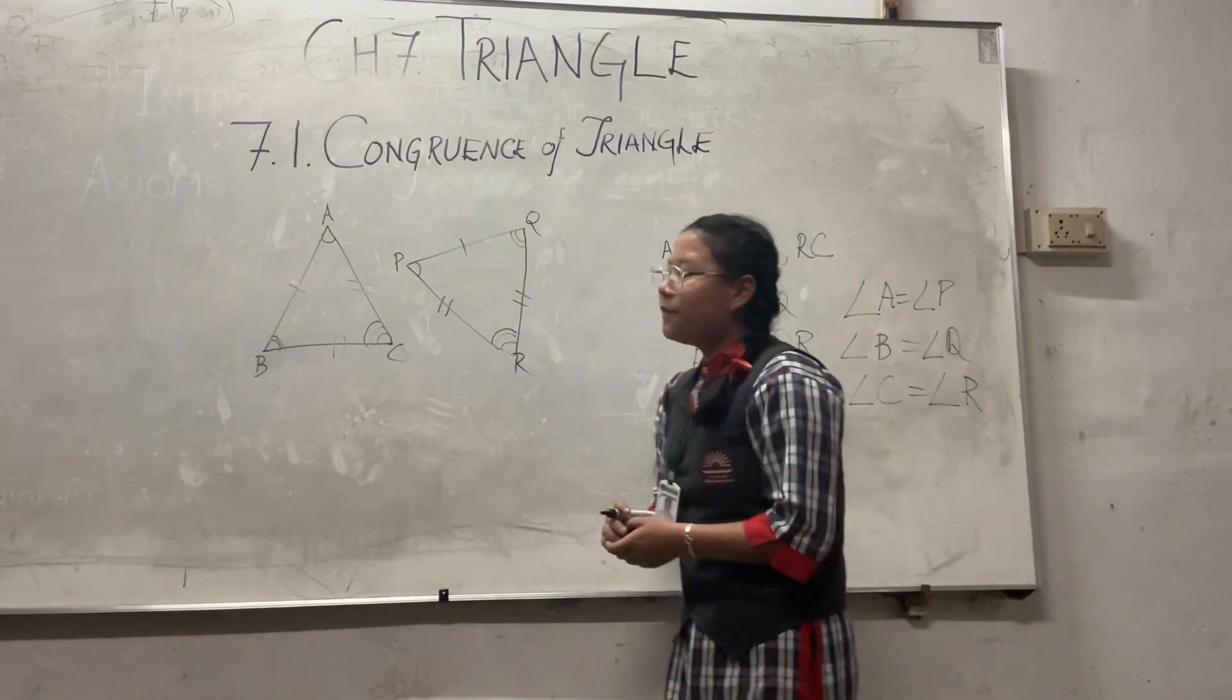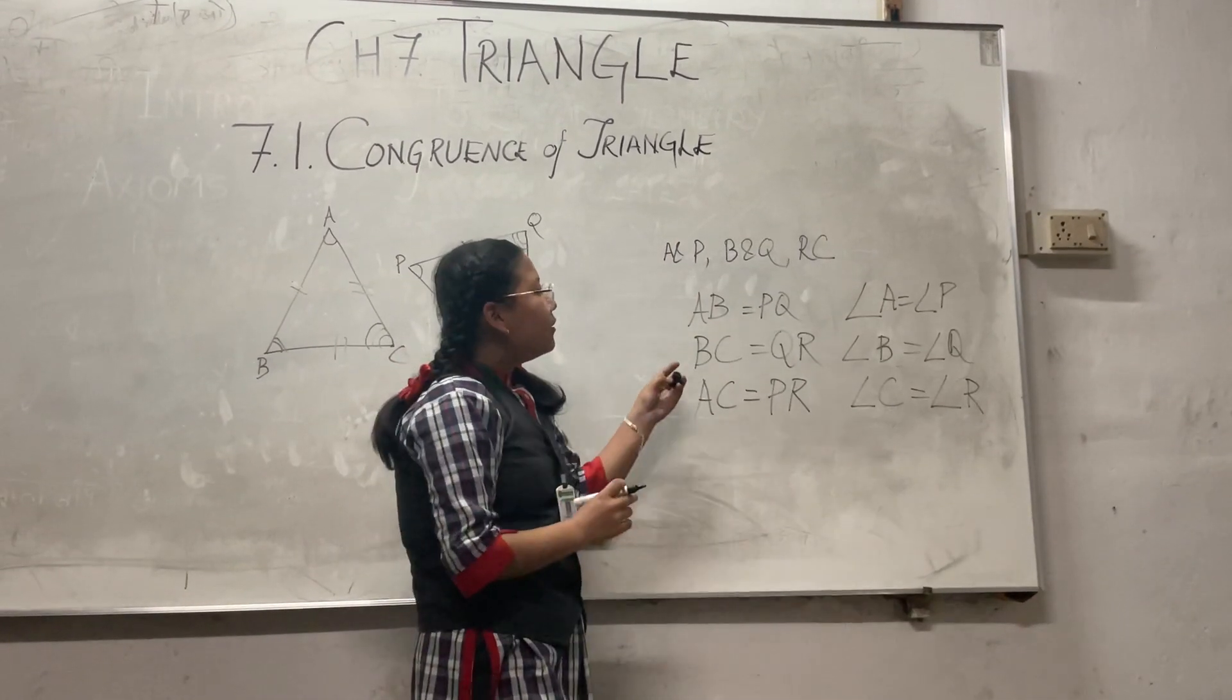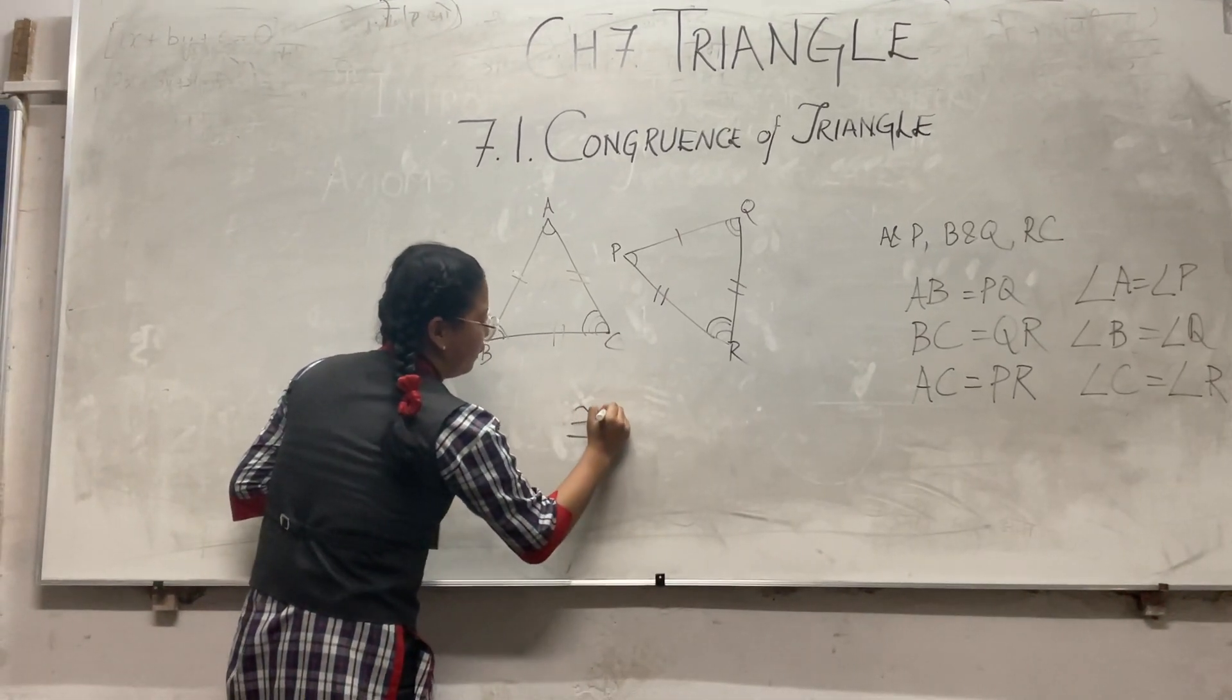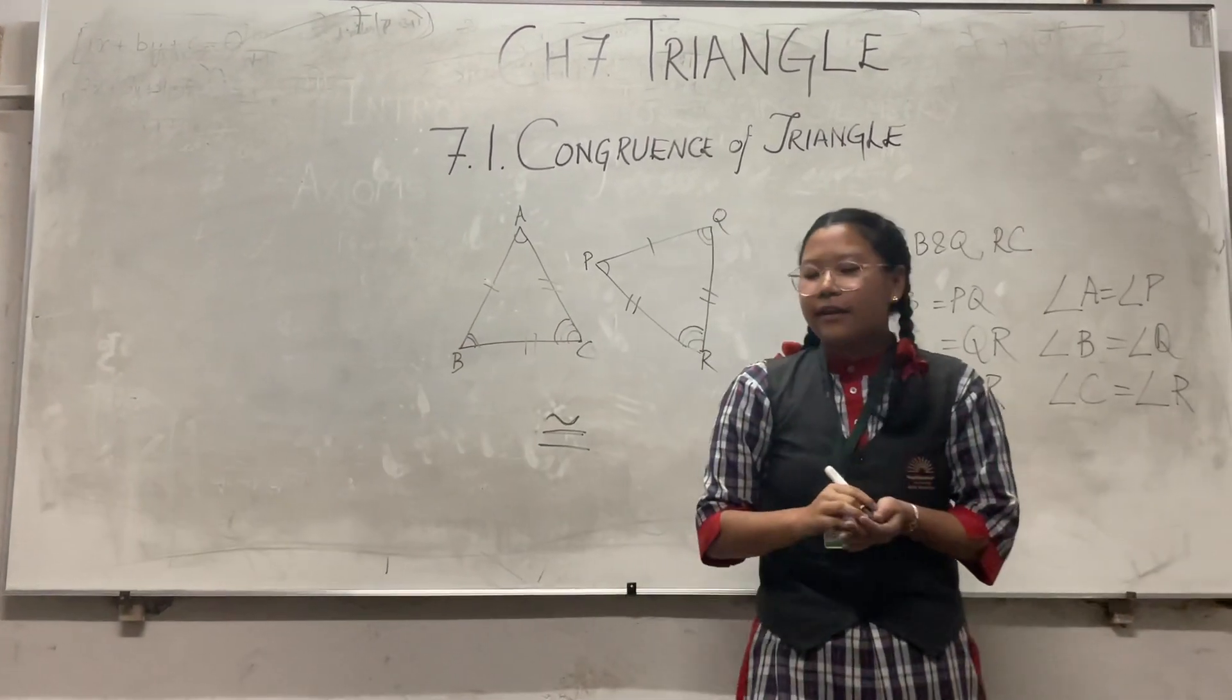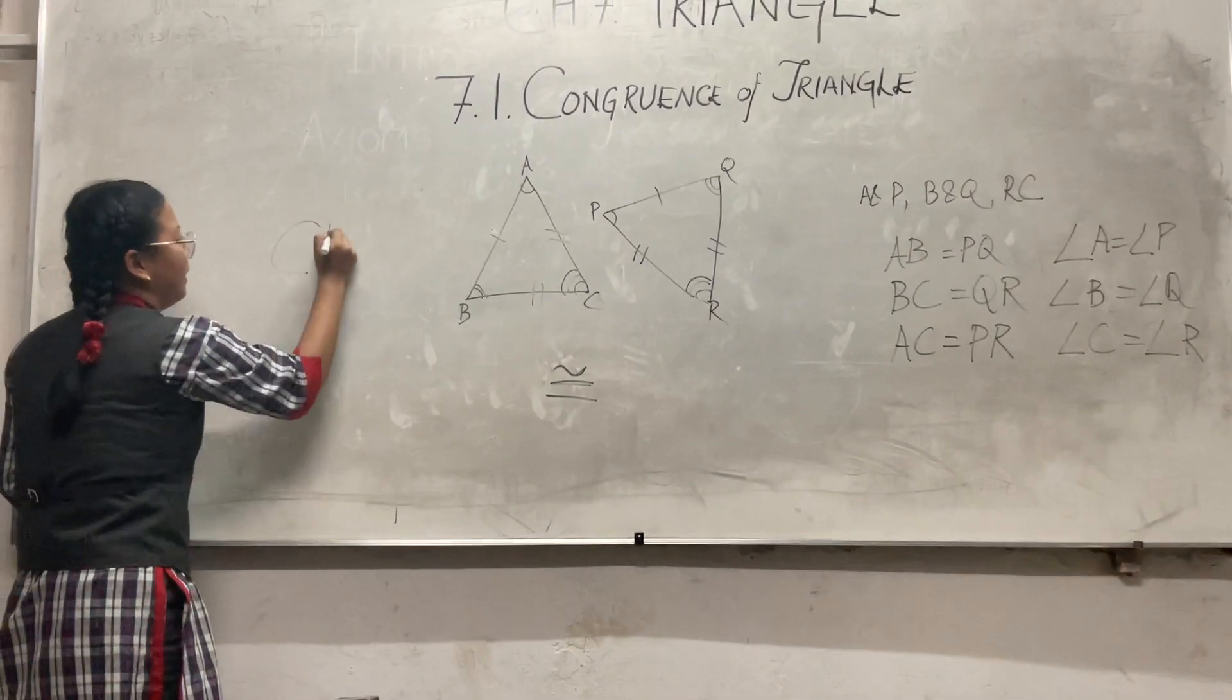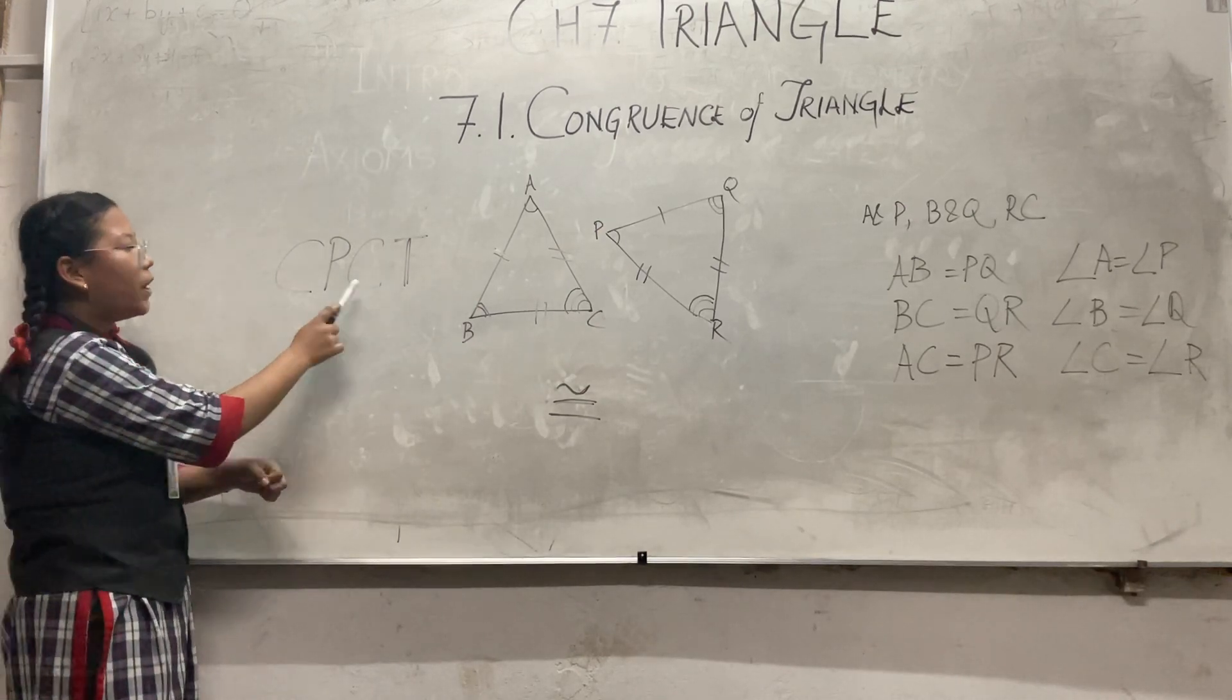So, as I said before, if all the corresponding sides of the triangle are equal, or all the corresponding angles of the triangle are equal, these two triangles are congruent, and the congruence is denoted by this sign. And as we know, in congruent triangles, all corresponding parts are equal. It is, in short, known as CPCT, which means corresponding parts of congruent triangles.